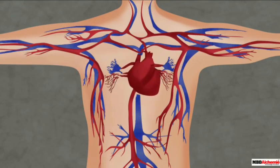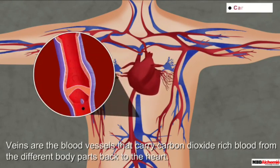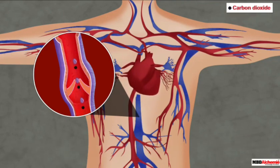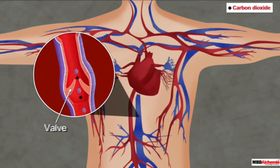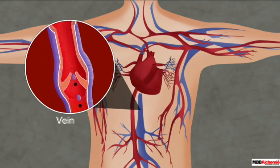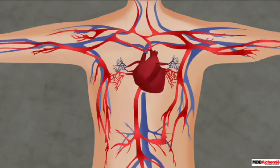Next is the vein. You can see in the picture. Veins are blood vessels that carry deoxygenated blood — that is, carbon dioxide-rich blood — from different parts of the body to the heart, through an opening called the valve. The valve allows the flow of blood only in one direction, that is towards the heart. The walls of veins are thinner than that of the artery.